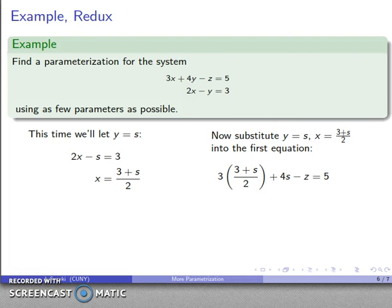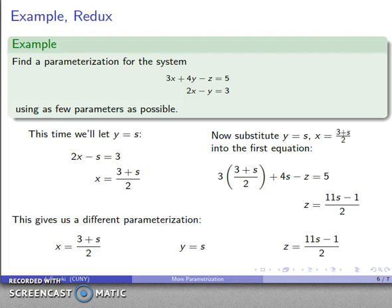I can drop those into the first equation. I'll get my new equation. The only variable I have here is z. Again, s is a parameter, and we'll consider that to be not a variable. I solve for z and get 11s minus 1 over 2. There's my parameterization. Same system of equations, radically different parameterization. The reason that we end up with this parameterization is we chose y to be s instead of x.